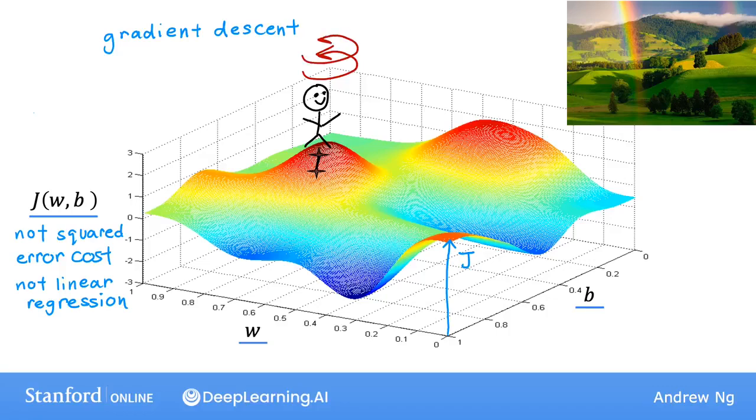It means that when you take a tiny baby little step, this takes you downhill faster than a tiny little baby step you could have taken in any other direction. So after taking this first step, you're now at this point on the hill over here. Now let's repeat the process. Standing at this new point, you're going to again spin around 360 degrees and ask yourself, in what direction would I take the next little baby step in order to move downhill?